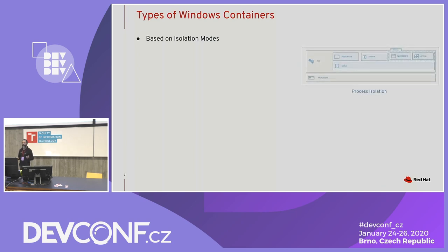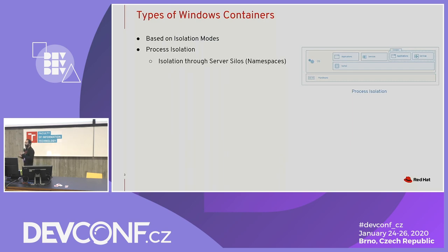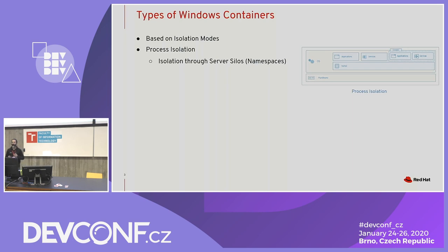The first mode people typically think about is process isolation. Process isolation means that you have namespaces, and you use those namespaces to protect containers from each other for multi-tenancy purposes. However, Windows has no construct called namespaces. Because of that, they came out with a construct called a silo — it's very close to namespaces, but doesn't work exactly the same way.